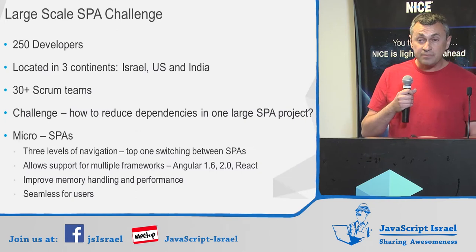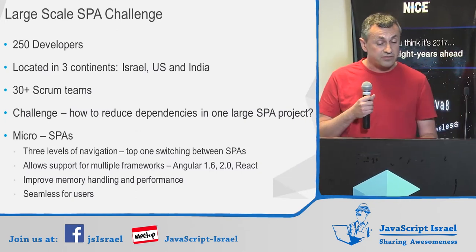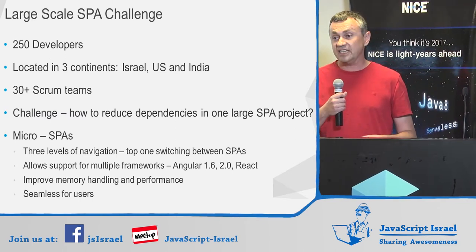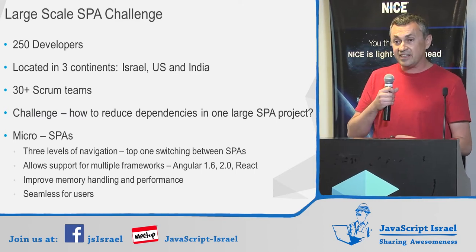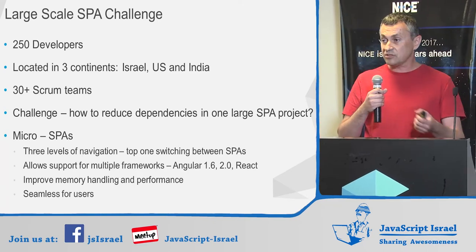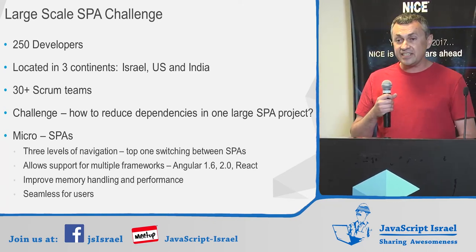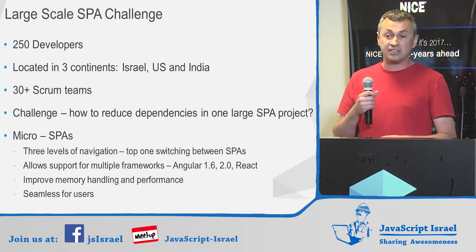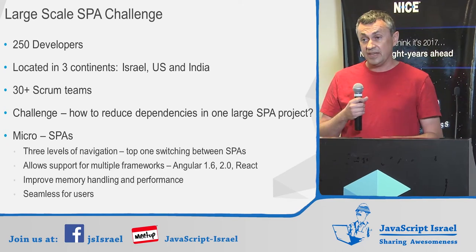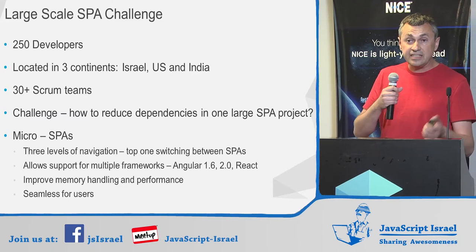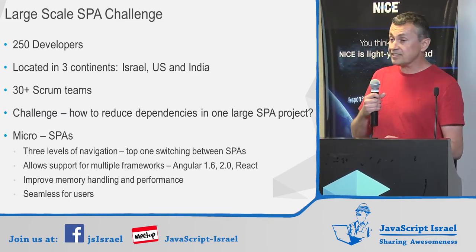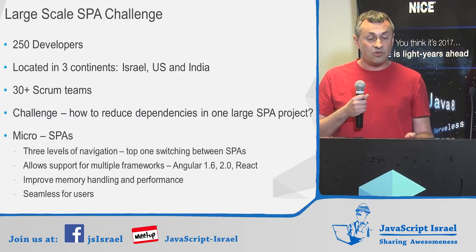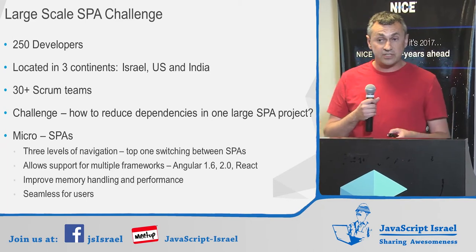So the challenge: the project we are developing — this pure cloud contact center software — has about 250 developers. As you can imagine, anyone working on a big HTML5 project knows that even with five or ten developers, after six months of development it becomes very hard to stay in control, especially when introducing additional technology. In this space, almost every six months there's a new shiny thing — Angular 1.5, 1.6, Angular 2, React — frameworks are changing all the time. With 250 developers across three locations — India, Israel, and the United States — it's very hard to stay agile and introduce new technology.